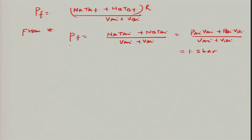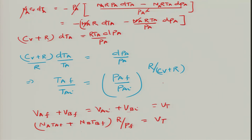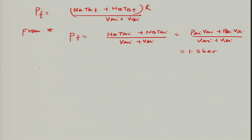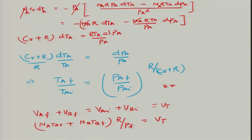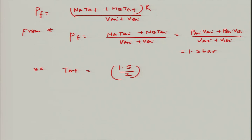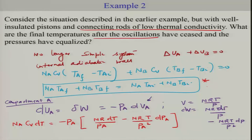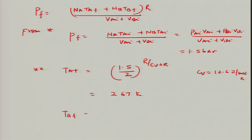With P_F equal to 1.5 bar, we return to the adiabatic expression for compartment A: T_AF equals 300 times (1.5 / 2)^(R / (C_V + R)). Using C_V equal to 12.6 joules per mole Kelvin, T_AF comes out to be 267 Kelvin. From the first-law energy balance, T_BF comes out to be 366 Kelvin.